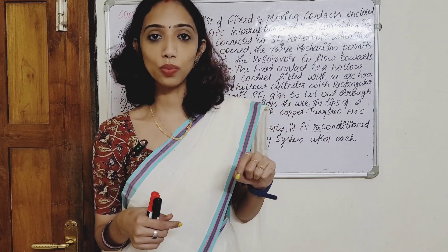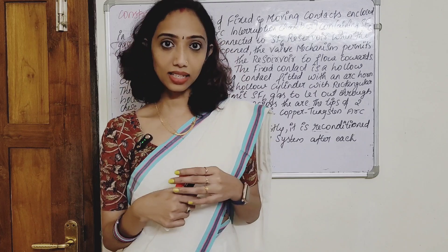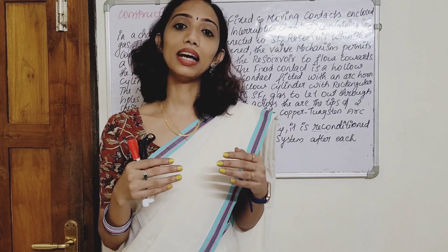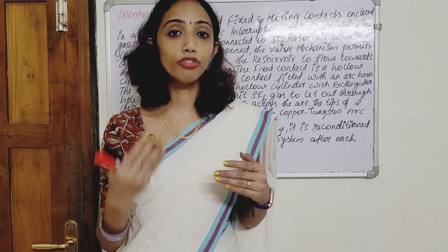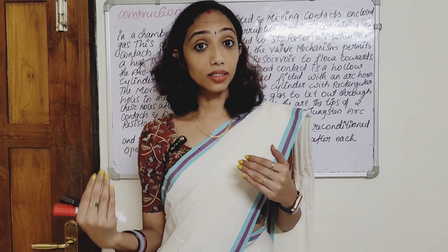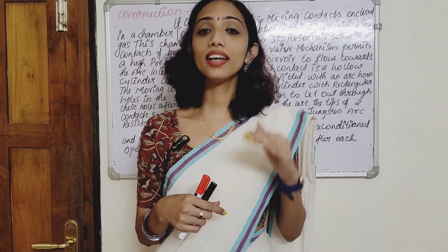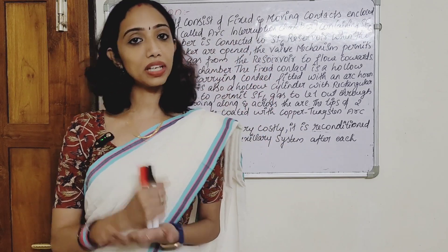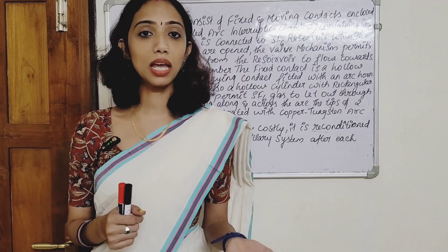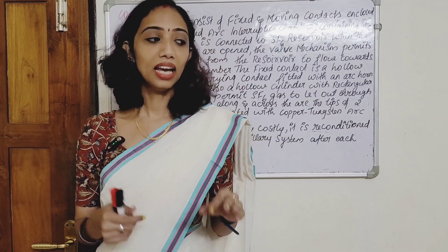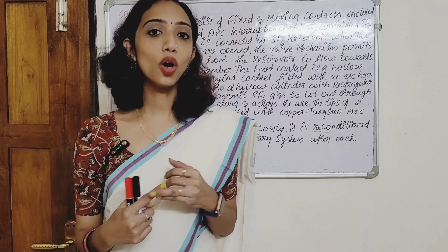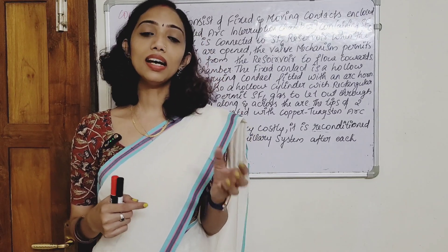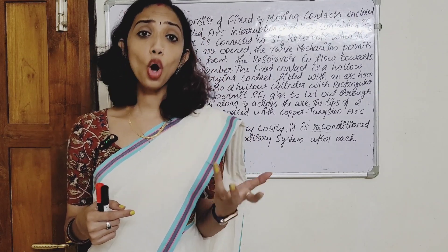The two contacts are housed in what we call an arc interruption chamber. When a short circuit current or high current occurs, the arc interruption takes place inside the arc interruption chamber. The main items in the construction are: the moving contact, fixed contact, and arc interruption chamber. The two contacts are made of copper-tungsten.